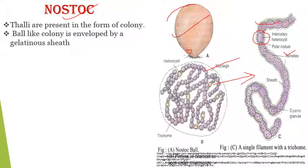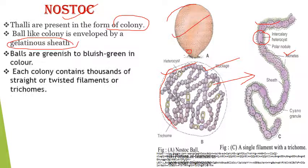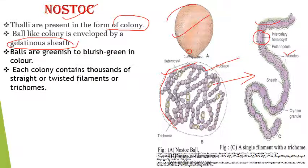The body form is thallus, meaning it is not differentiated into true root, stem, or leaf. The thallus is present in the form of a colony — a ball-like colony which is enveloped by a gelatinous sheath. The structure is bluish-green in color. The colony is made by thousands of twisted or straight filaments of Nostoc that get intermingled and form this colonial form.